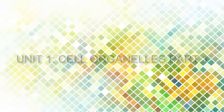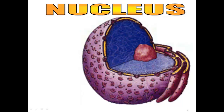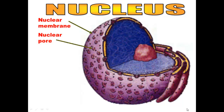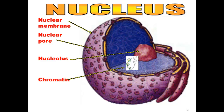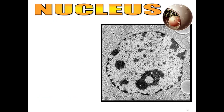We'll start with the nucleus. The nucleus has five different parts: the nuclear membrane, the nuclear pores in the membrane, the nucleolus, the chromatin — which is the DNA tightly coiled up — and the nucleoplasm.